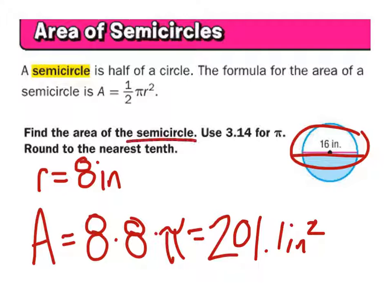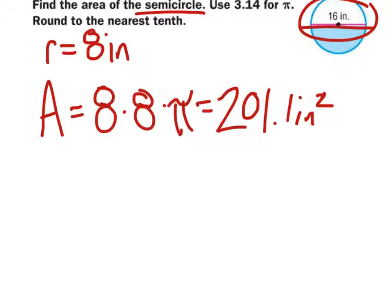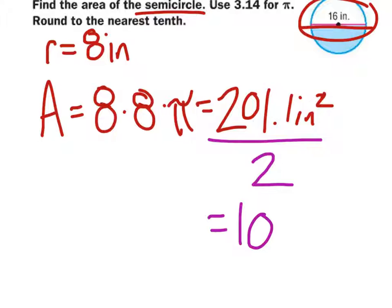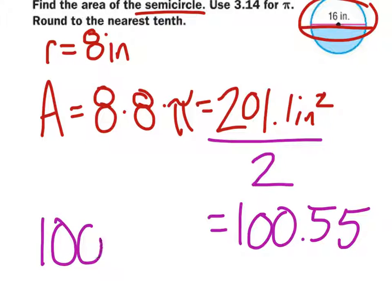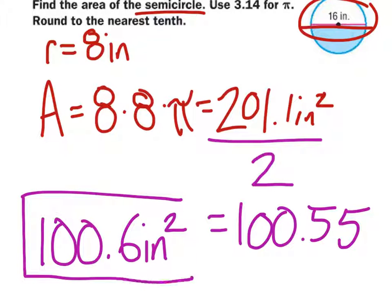What we want is the semicircle, so we take 201.1 and divide it by 2. That gives us the area of the semicircle: 100.55, which we can round to 100.6. The units remain inches squared because it is area and therefore two-dimensional.